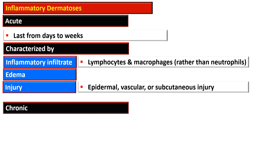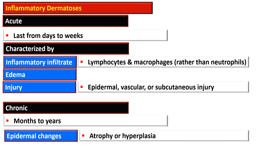Injury to the epidermis, vascular tissue, or subcutaneous tissue is also seen in acute lesions. Chronic lesions span from months to years and are characterized by epidermal changes — either atrophy or hyperplasia — and dermal fibrosis.